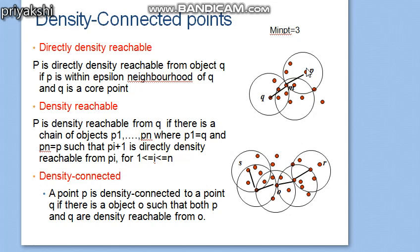The density reachable concept is symmetric in nature. That means if p is density reachable from q, then q is also density reachable from p. So the relation is always symmetric.